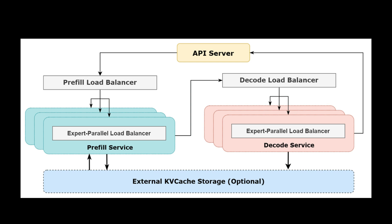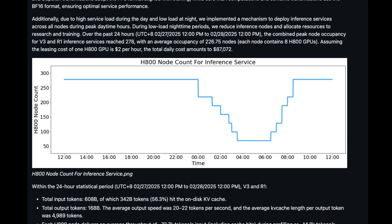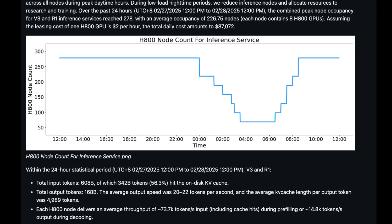Putting it all together over a 24-hour window: on a single H800 node with eight GPUs, they can sustain about 73,700 tokens per second during the pre-filling phase and 14,800 tokens per second during the decoding phase. Multiply that by hundreds of nodes — with a maximum peak of 278 nodes — and you can see how they hit those massive daily token counts.